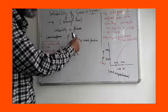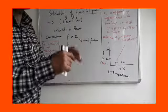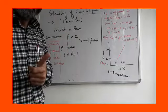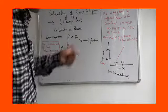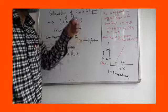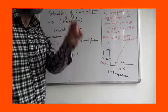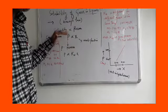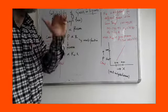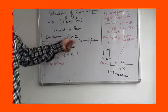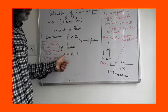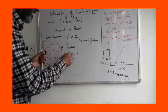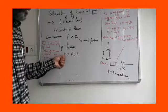If the mole fraction of the gas in the solution is high, the partial pressure of the gas in the vapor phase will be more. If the mole fraction of the gas in the solution is less, the partial pressure of the gas in the vapor phase will be low.